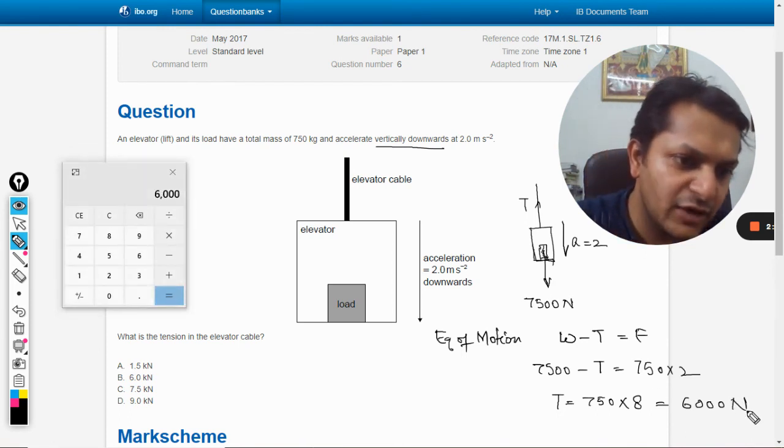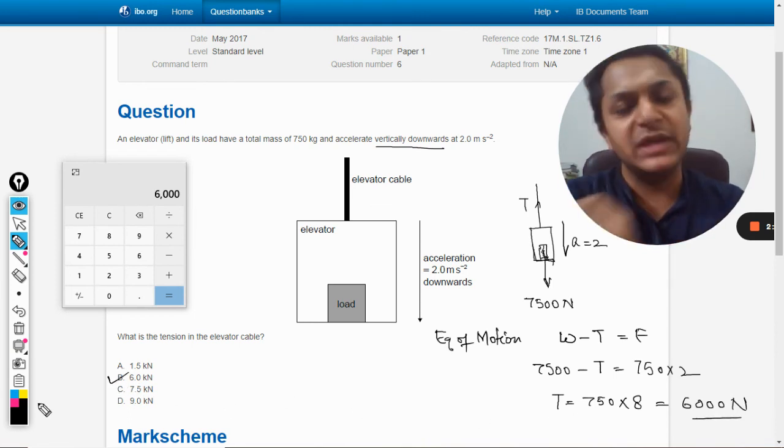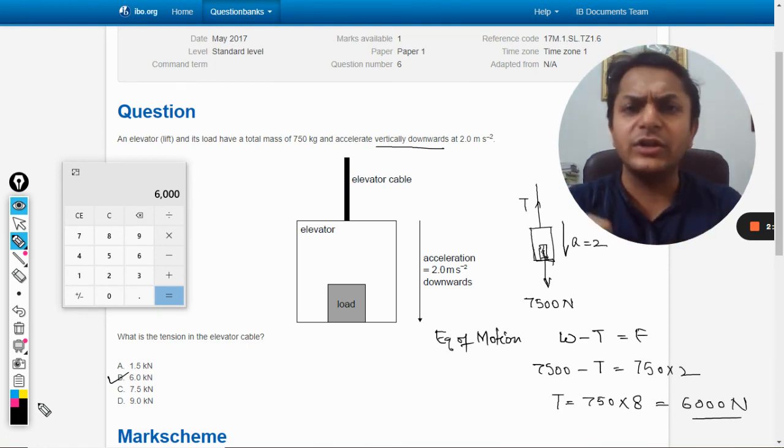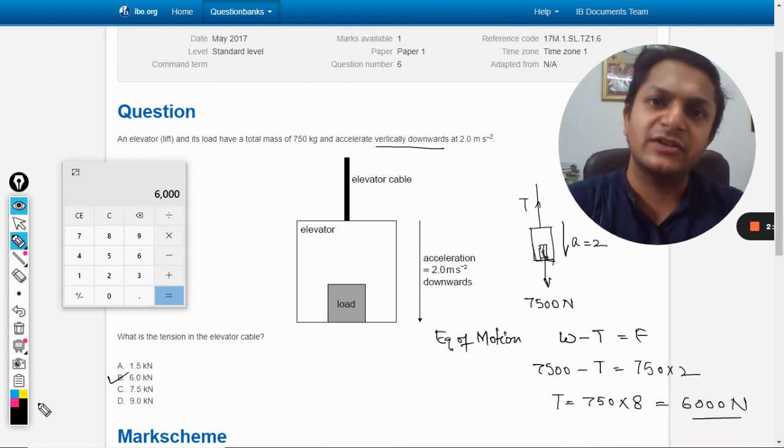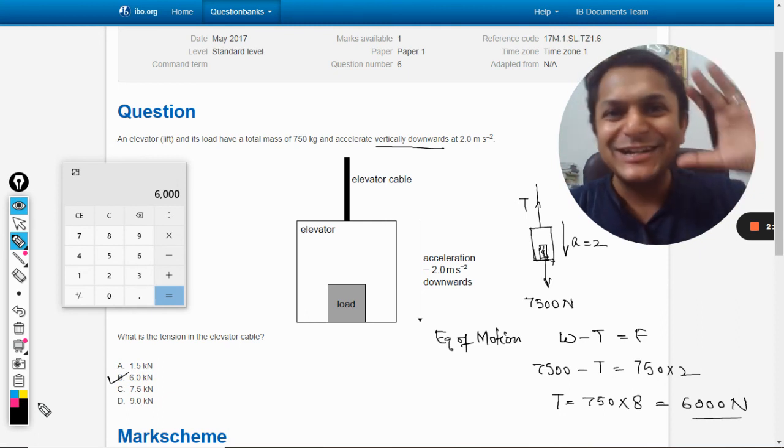Exactly, this is 6000 newtons, so our answer will be B. I hope this is very clear. If there is any doubt in this question or in this kind of question, please let me know in the comment section. I will give you the complete theory of the lift problem. All the best, bye.